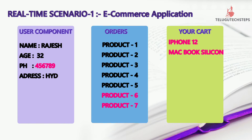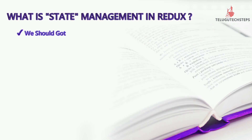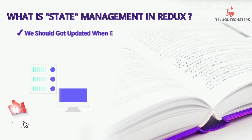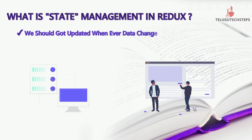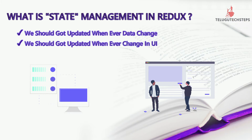In this case, each and every component has two points: data and user interface. Redux as a state management library stores back-end data in a single internal store. In a single store, every single component is synchronized at the same time, so every single component gets updated. In the store, we maintain the state of every single component, and all components will be updated accordingly.